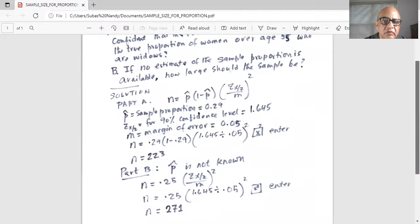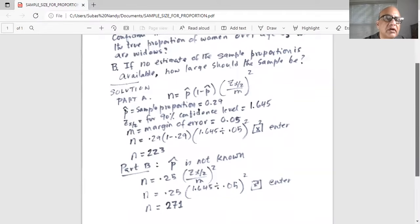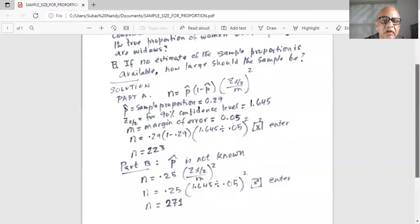So the first two terms in that equation becomes n equal to 0.5 multiplied by 0.5 which is 0.25. So the equation for the sample size is changed to 0.25 because 0.5 multiplied by 0.5 is 0.25 then in parenthesis z alpha by 2 divided by m and the whole thing is squared.